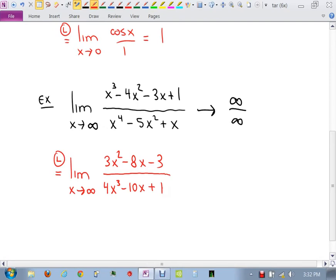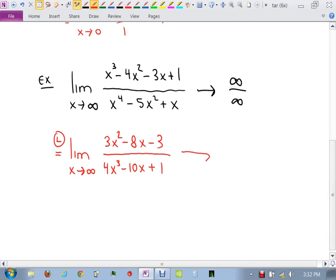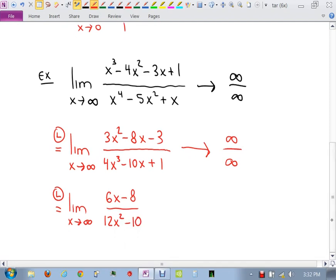And I get 3x squared minus 8x minus 3 all over 4x cubed minus 10x plus 1. Infinity over infinity. So you might be thinking to yourself, well, that didn't help, right? But the great thing about L'Hôpital's rule is that you can continue to use it until your limit becomes something you can evaluate. As long as the next step down gave you infinity over infinity again, you can go again. So we go L'Hôpital again.